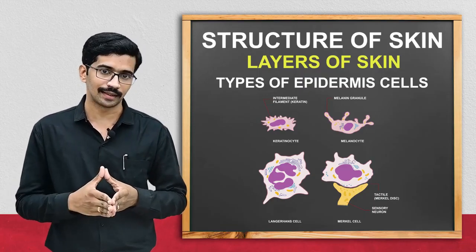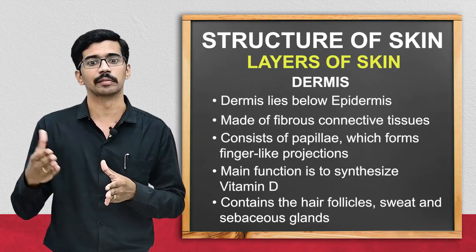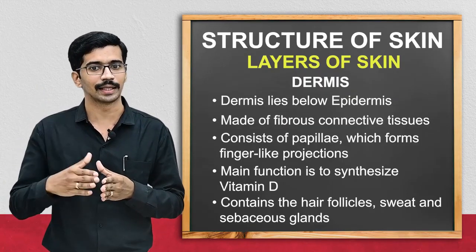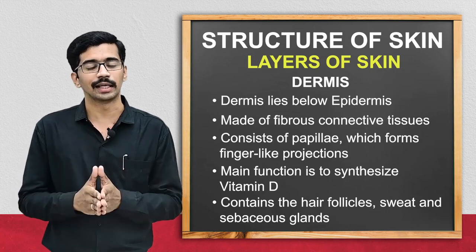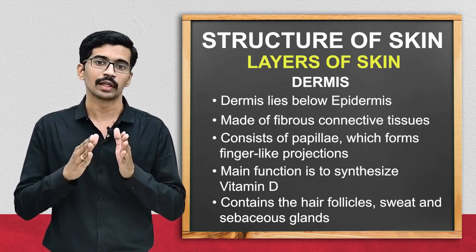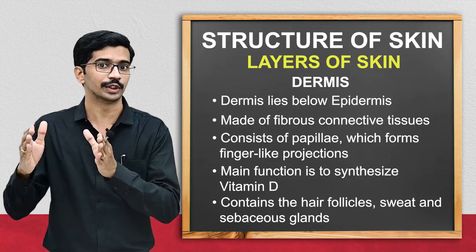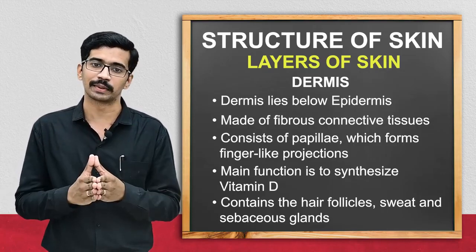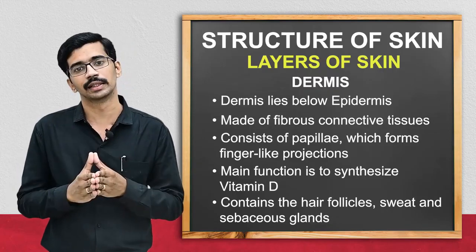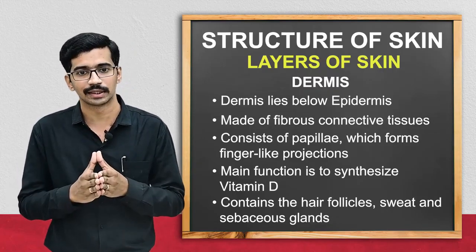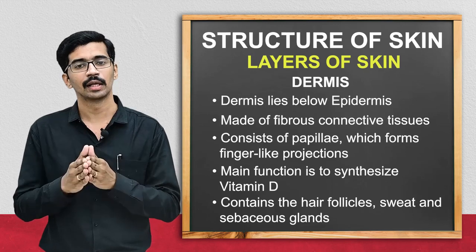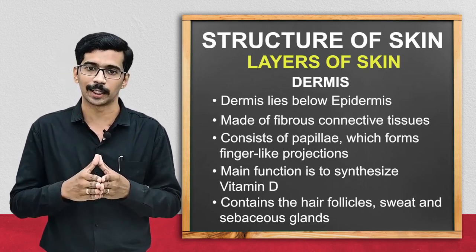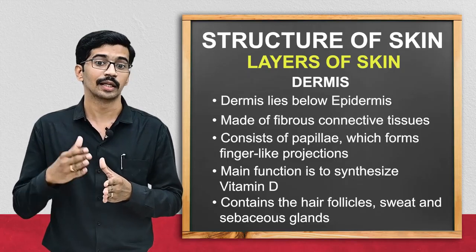The second layer of skin is the dermis. This layer is seen just below the epidermis and is mainly made up of fibrous connective tissue. Collagen fibers, some fat tissue, and other fibers are present in this layer. There are also certain finger-like projections in this layer, which we term papillae.